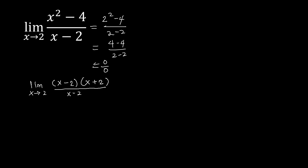If we look at this, we can cancel the x minus 2 in the numerator and denominator. We are now left with the limit of x plus 2 as x approaches 2. After cancellation, we can substitute directly: 2 plus 2 equals 4. So the limit of x squared minus 4 over x minus 2 as x approaches 2 is 4.